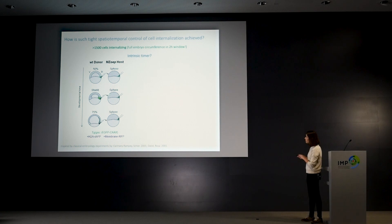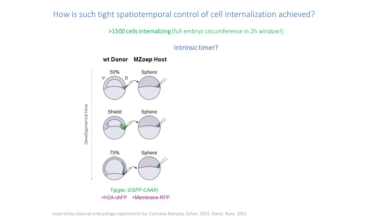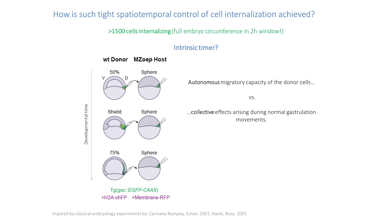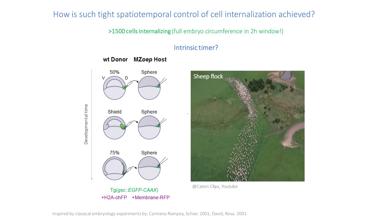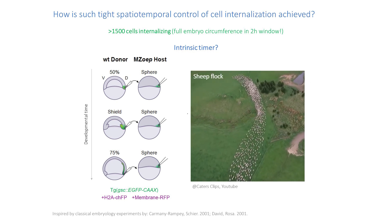We transplanted these cells into a mutant embryo that lacks both mesoderm and internalization movements, and watched how the transplanted cells internalize in each case. This allowed us to really discriminate the autonomous migratory capacity of the donor cells versus any collective effects that happen during normal gastrulation movement.